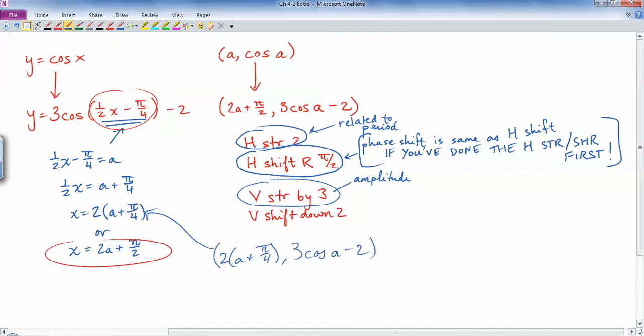But in this one you do a horizontal shift first of π/4 to the right, followed by the horizontal stretch by 2. That's still going to work, except that if you write it this way then the shift comes before the stretch.